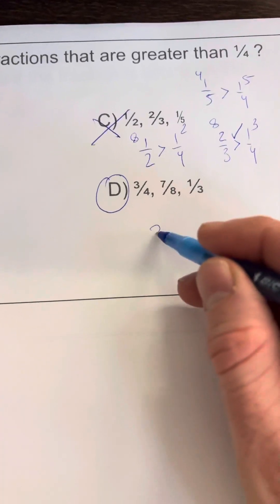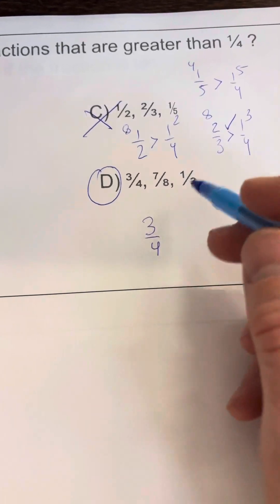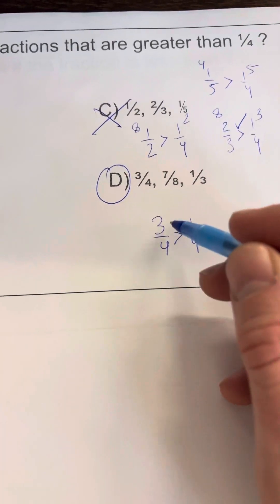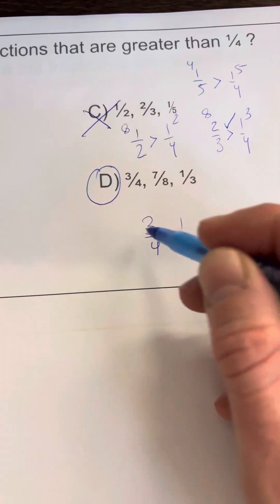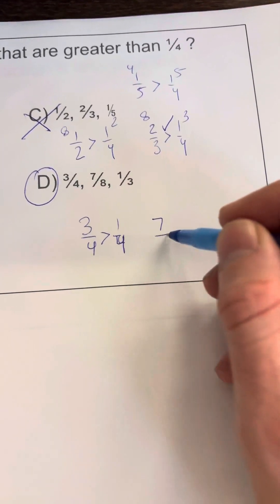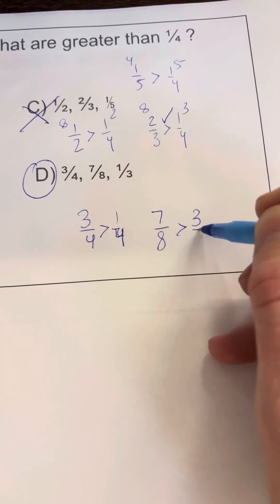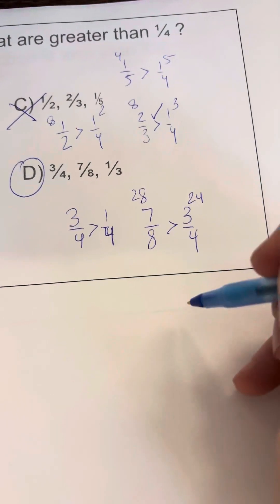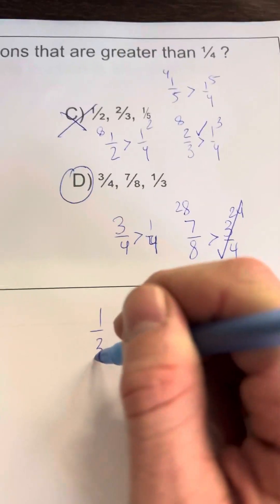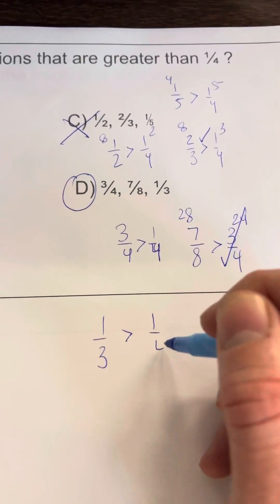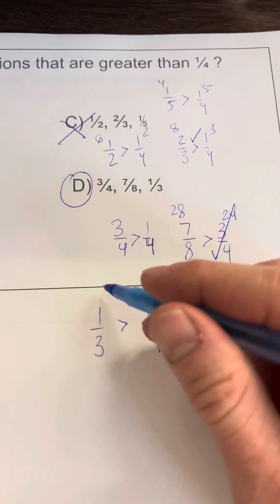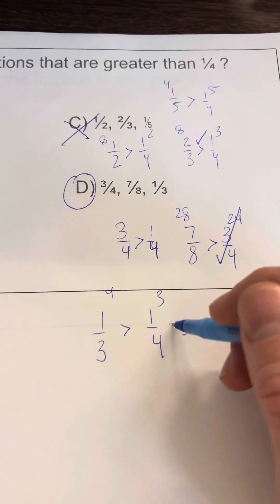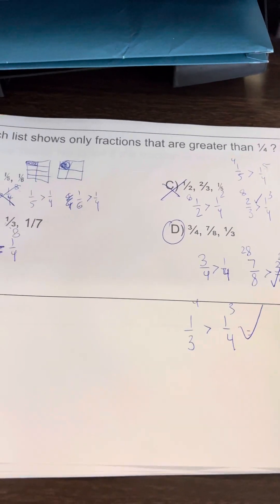Three-fourths is obviously bigger than one-fourth—it's the same denominator so we can just look at the numerator. Seven-eighths is greater than three-fourths... correct. And one-third is greater than one-fourth. Let's check: four, three—yep, that's correct. Awesome, so that answer is D.